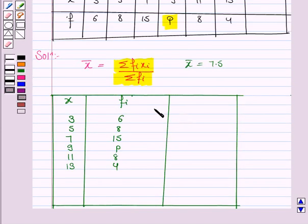This is the distribution table. We will find the product FI XI. 3 into 6 is 18, 5 into 8 is 40, 15 into 7 is 105, 9 into P is 9P, 11 into 8 is 88, 13 into 4 is 52. Now we have to find summation FI XI.